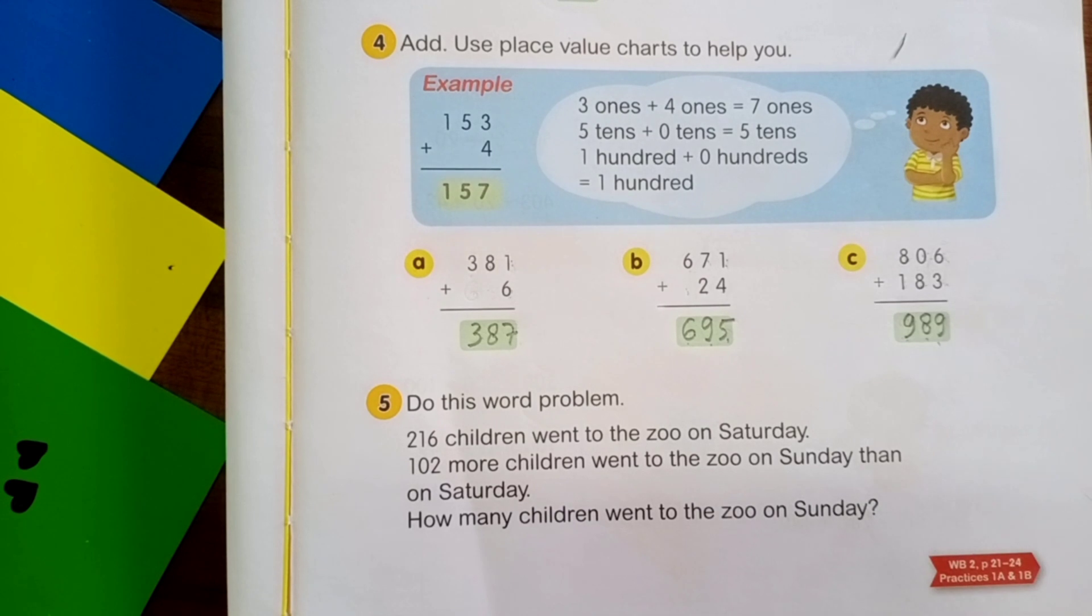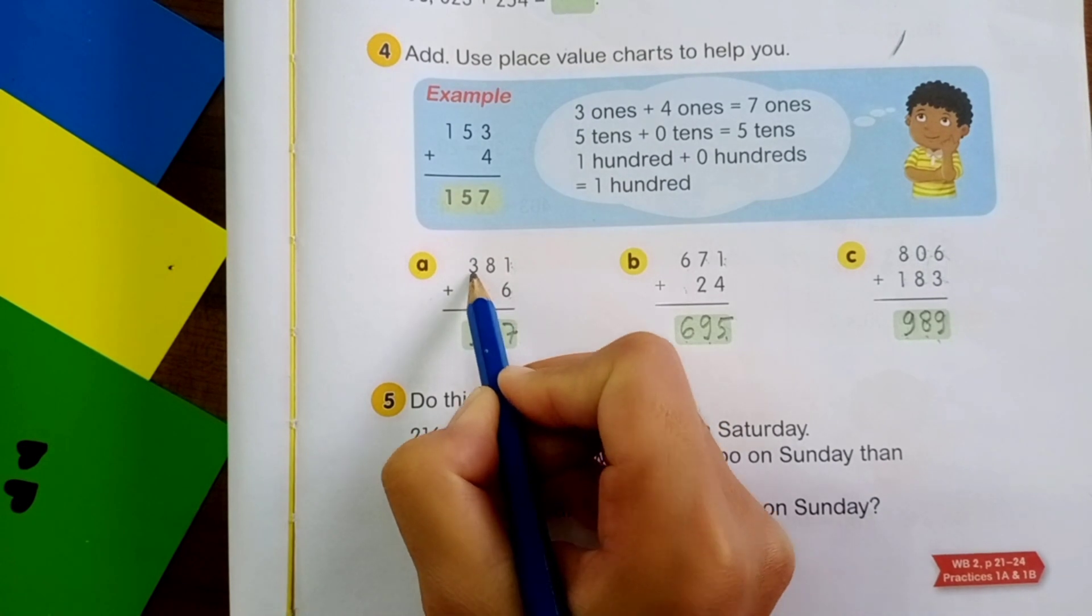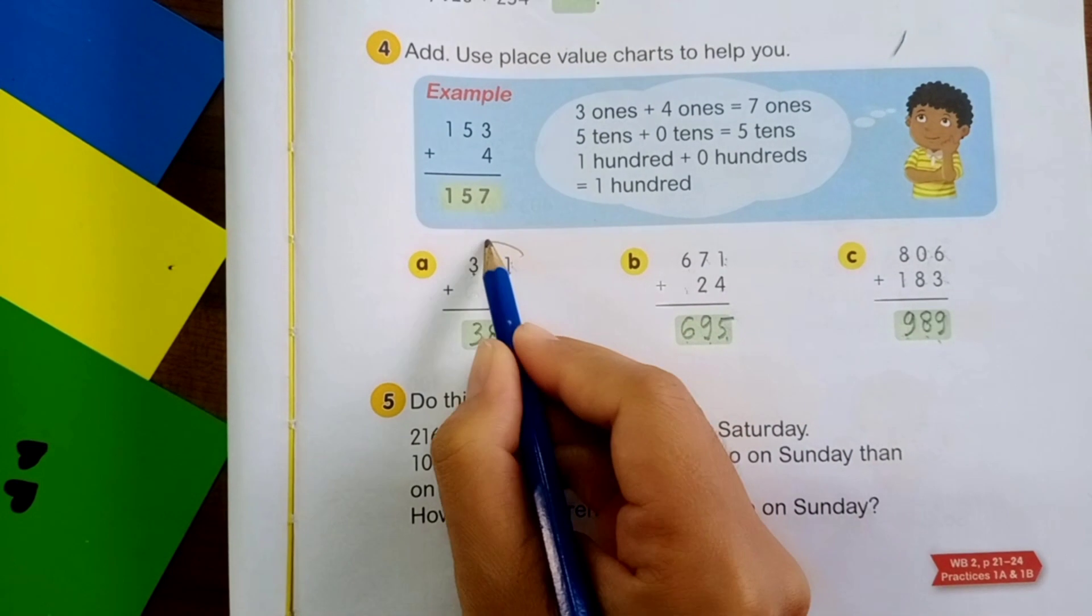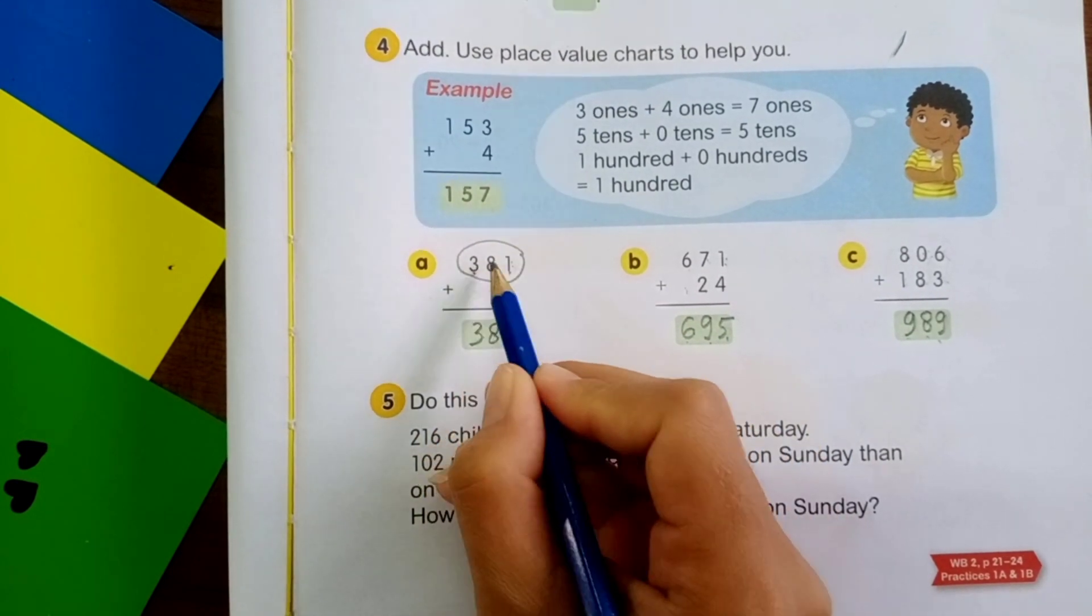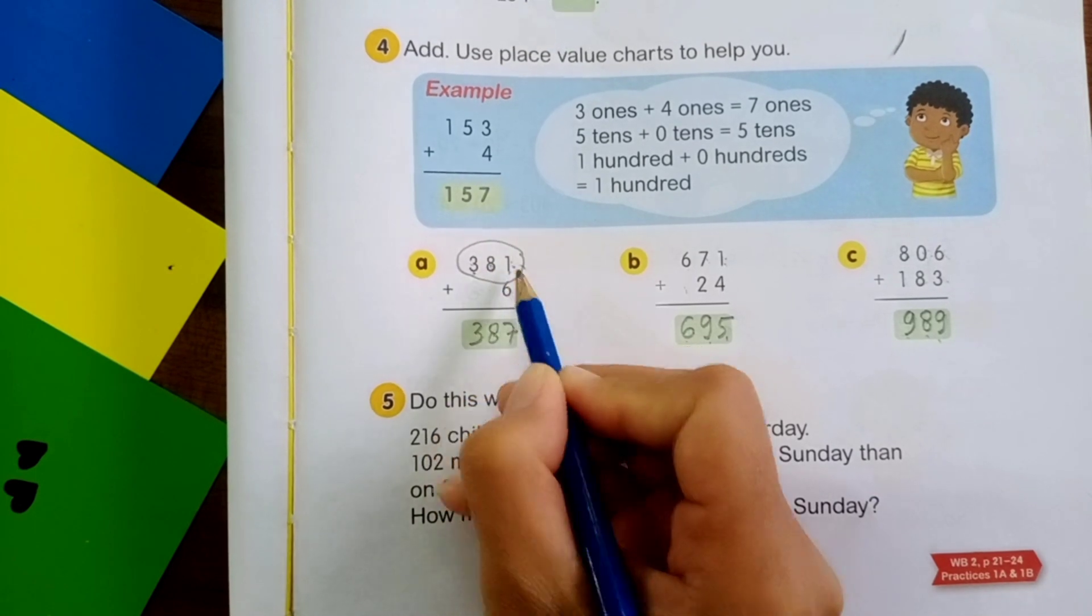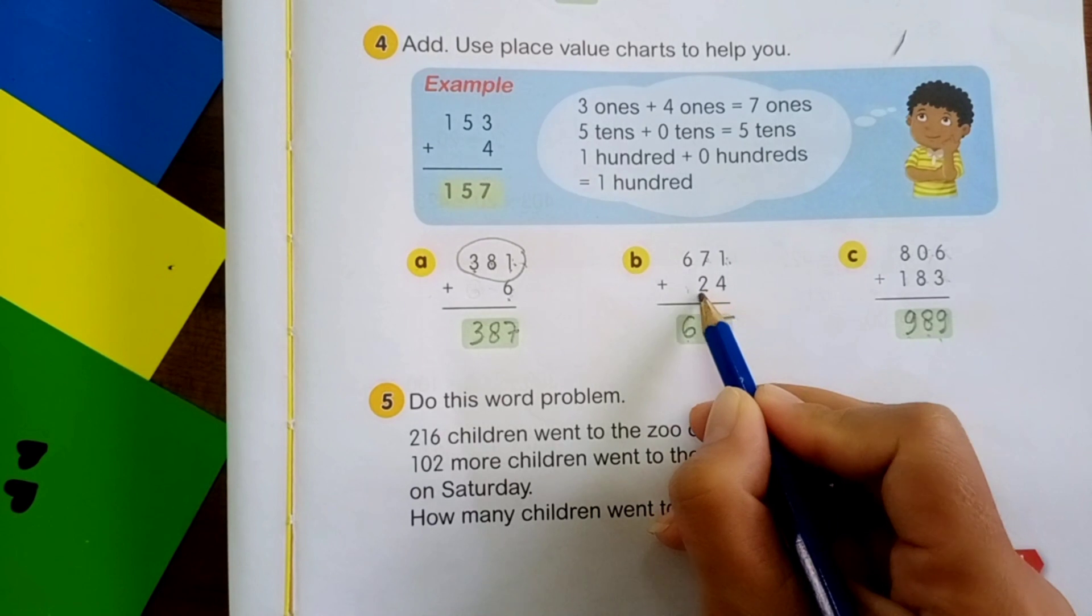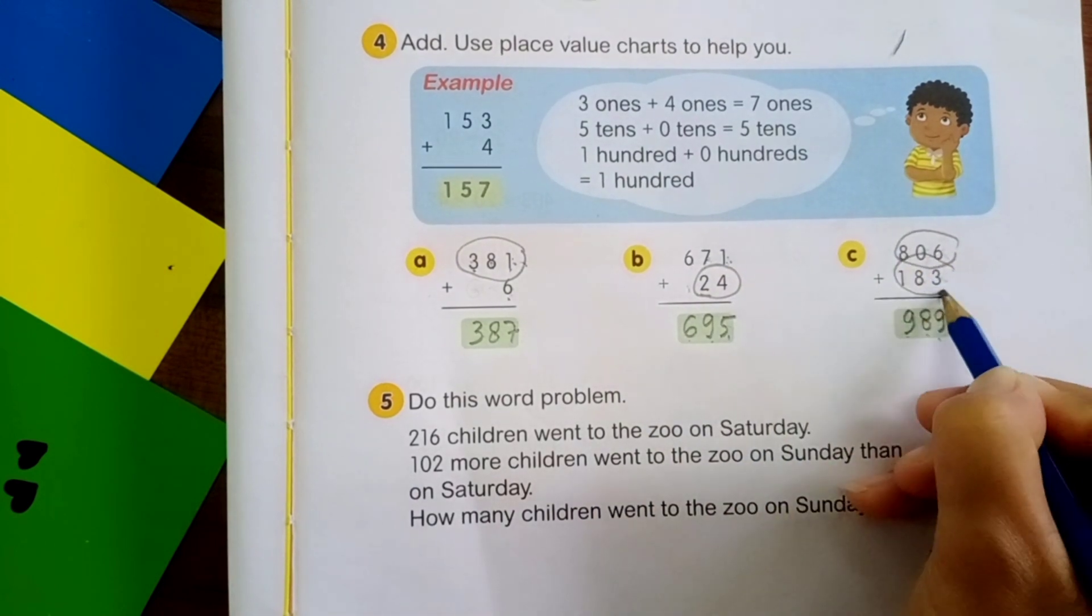And maybe some of you ask, what is digit? This is what we call digit. 3, 8, 1. And this is number 381. So there are 3 digit number here. And this is only 1 digit. This is 3 digit. This is 2 digit. This is 3 digit. This is also 3 digit.